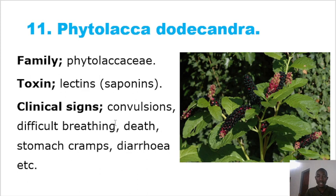Another common toxic plant is Phytolacca dodecandra. The toxins present are lectins. Clinical signs include convulsions, death, stomach cramps, and diarrhea.